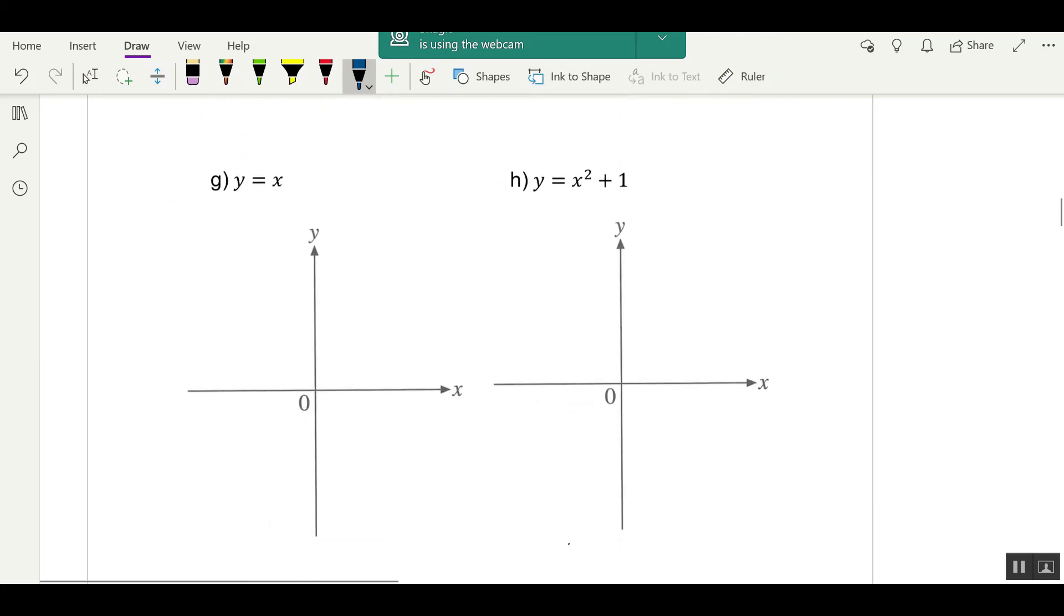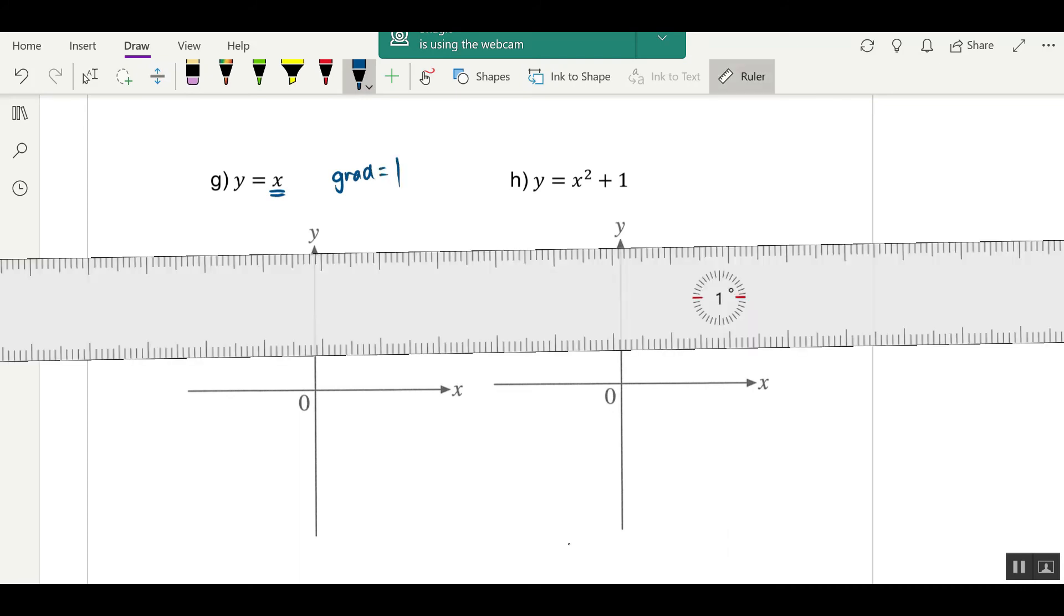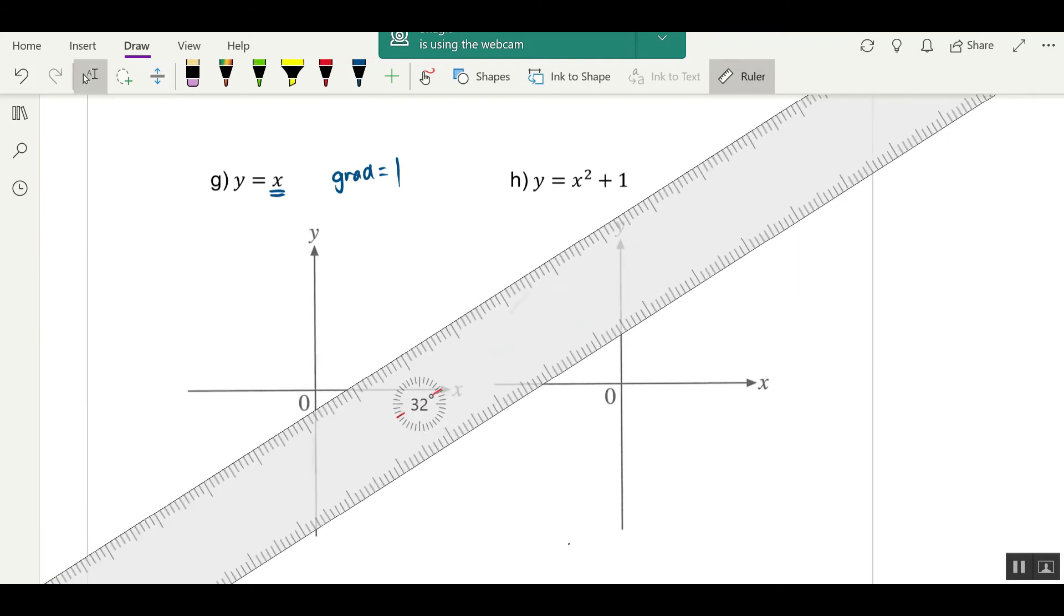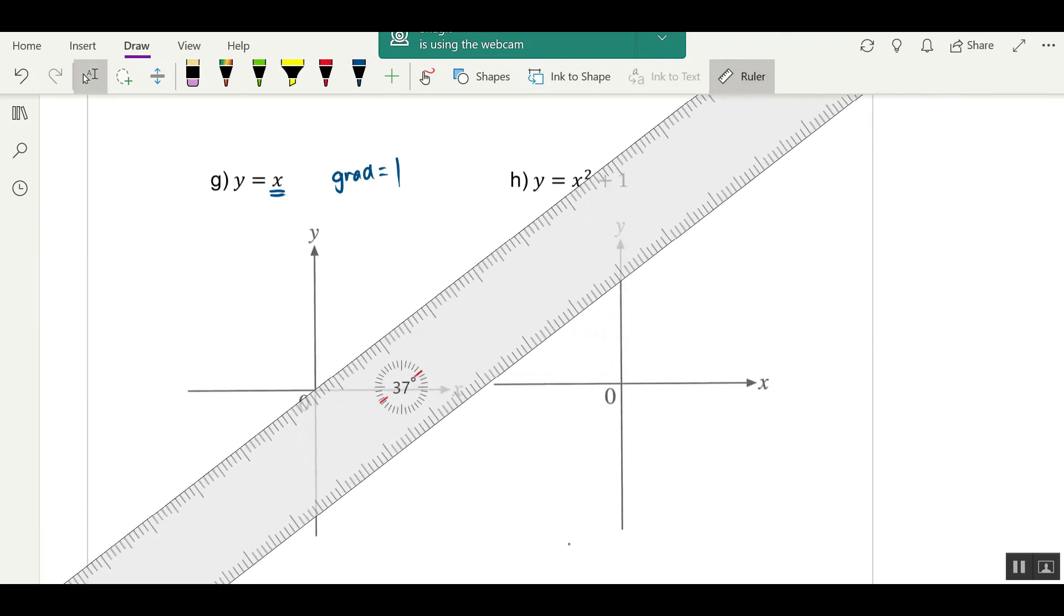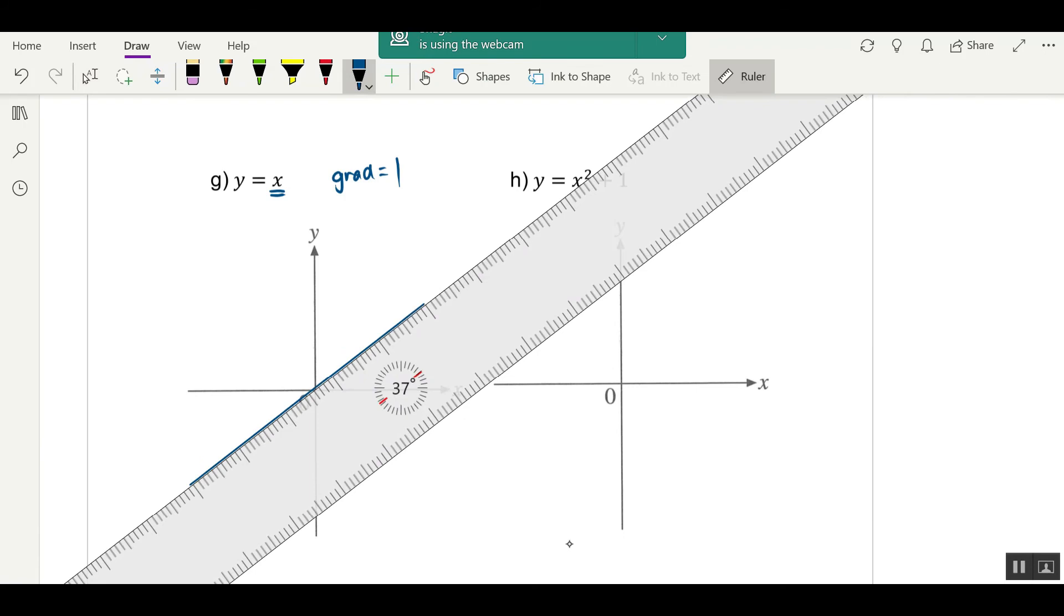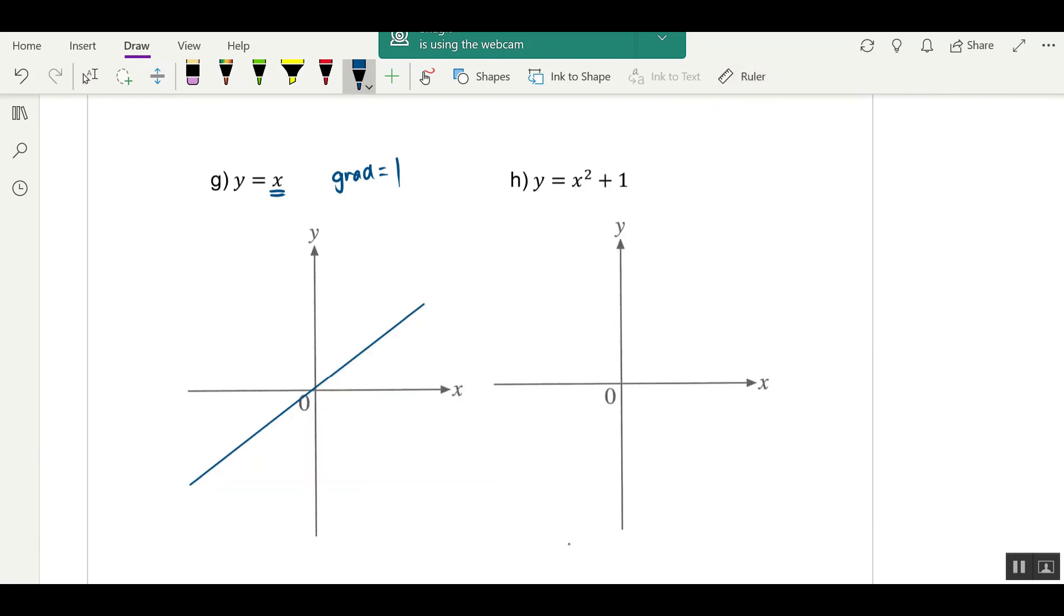y equals to x when x is the power of 1. What kind of line is this? A linear line. A straight line. Going up or going down, the gradient of this line is equal to 1. So it's going up. And the intercept? No intercept. So it would look like this.